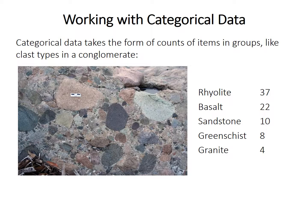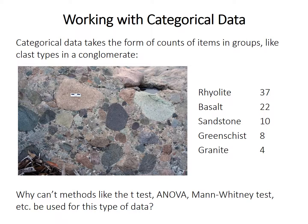Here's a hypothetical example where we have counts of rock types found in a conglomerate. So why can't we just use a t-test to determine if there's more rhyolite in this conglomerate than in another? Well, the first problem is that we only have a single value — we know there are 37 rhyolites, but we don't have a mean or a standard deviation. We could visit many locations and count 100 rocks at each, but that would be extremely impractical.